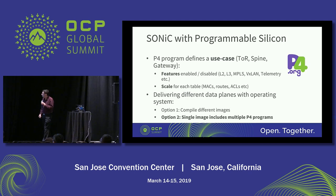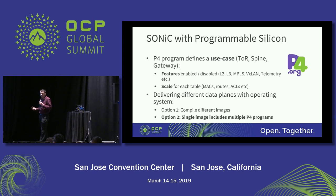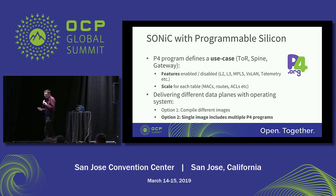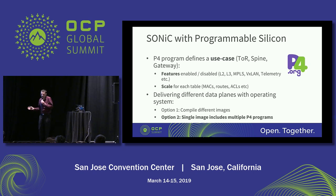A P4 program really defines a use case based on the features and scale that are enabled. Unlike a fixed-function chip, you may need a V4-heavy network or a V6-heavy network, very high tunnel scale for VXLAN tunnels, or medium scale — why use chip space you could reclaim for something else? So going back to how you make SONiC work with a programmable data plane, you have two options: compile different SONiC images each with a different data plane, but that's cumbersome and very difficult to manage regression. So what we introduced in 2018 is the ability to have a single SONiC image support multiple P4 programs.